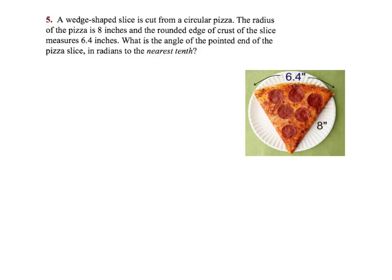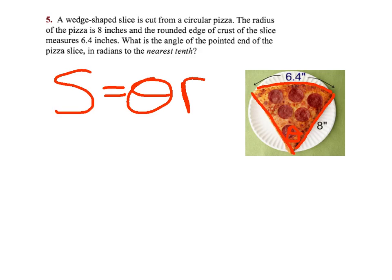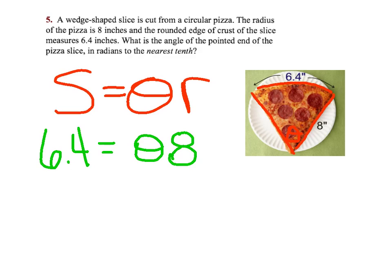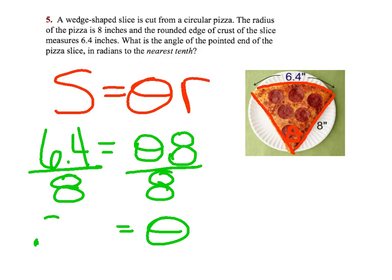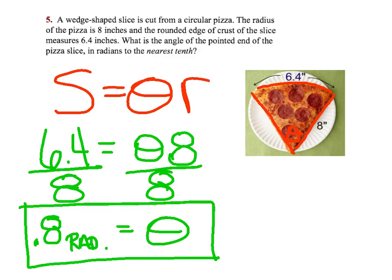A wedge-shaped slice is cut from a circular pizza. The radius of the pizza is 8 inches. The rounded edge of the crust — the arc — is 6.4 inches. What is the angle of the pointed slice? Using s equals theta r: 6.4 equals 8 times theta. Dividing by 8 gives theta equals 0.8 radians.